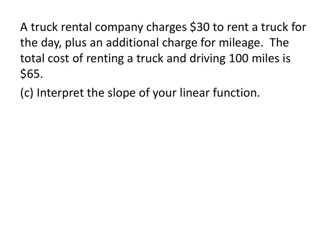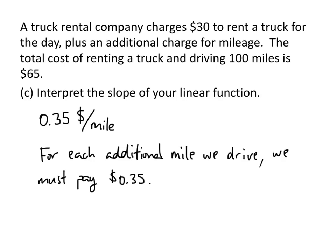Finally, we're asked to interpret the slope of our linear function. The slope was 0.35, and the units were dollars per mile. Just like before, this tells us about the cost of additional miles, not the total cost per mile. We might say: for each additional mile we drive, we must pay 35 cents. The slope tells us that as X increases by 1 — as the number of miles driven increases by 1 — our cost increases by $0.35.